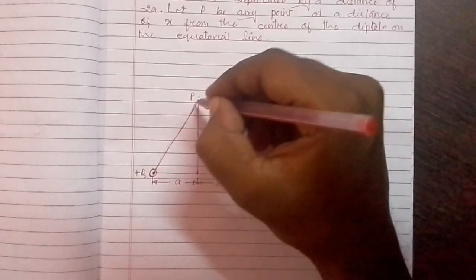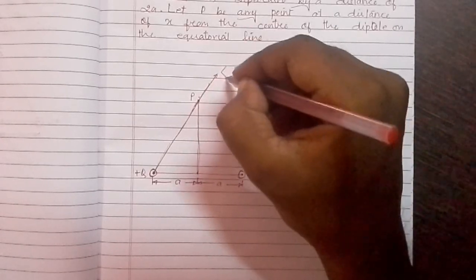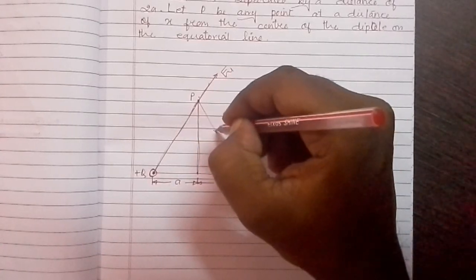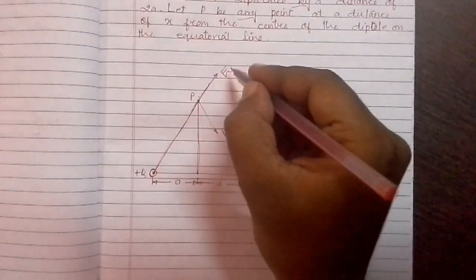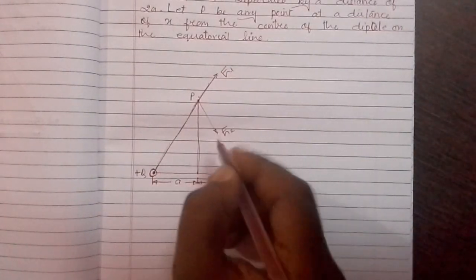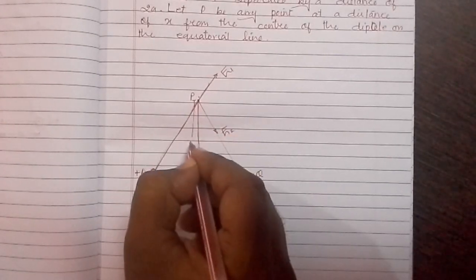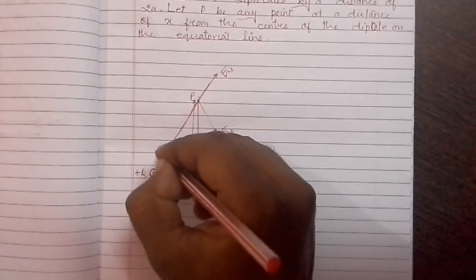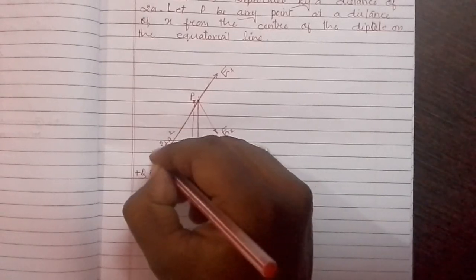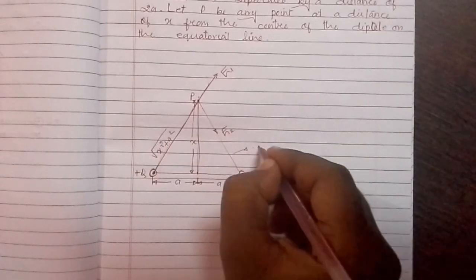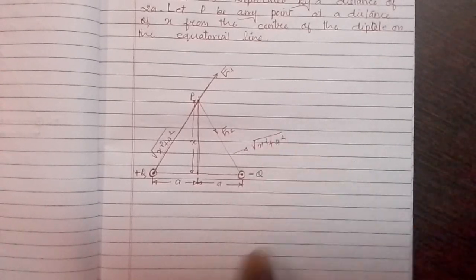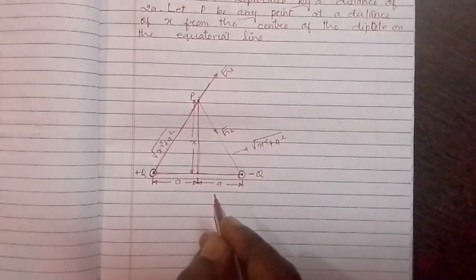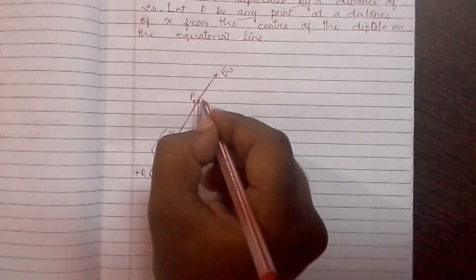The positive charge will tend to push it. Let the electric field due to the positive charge be E1 and due to the negative charge be E2. So E1 will repel it and E2 will attract it. Let the distance from the charge to point P be x, then the distance from each charge to P will be the square root of x squared plus a squared, by applying the Pythagorean theorem. This line is the axial line and this line is the equatorial line. Let us draw a line parallel to the axial line passing through point P.